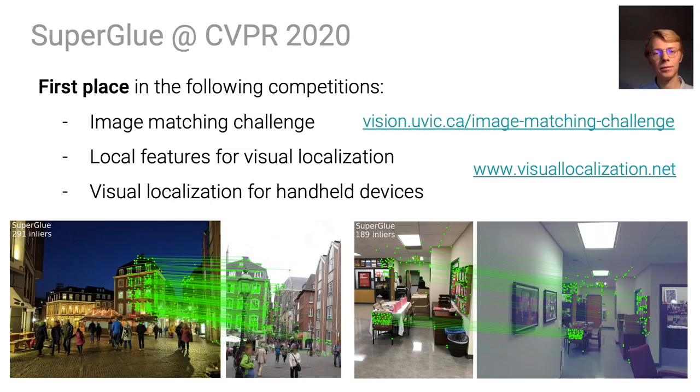SuperGlue generalizes well to different cameras, motions, and environments. It has earned first place in three CVPR competitions on image matching and indoor-outdoor visual localization with a single trained model. You can see on the left an outdoor night query successfully localized against the daytime map. On the right is an example of indoor localization with little texture.